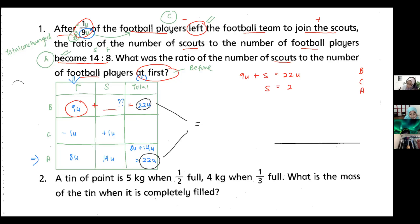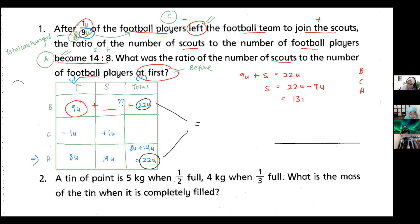Take 22 and subtract nine units — you get 13 units for scouts before. So what is the ratio of scouts to football players at first? Scouts to football players: 13 to 9.